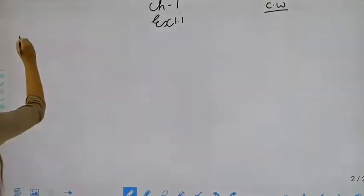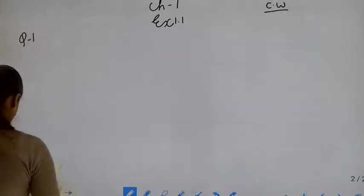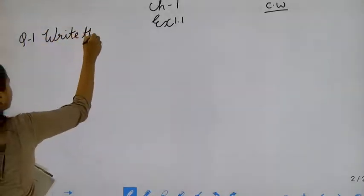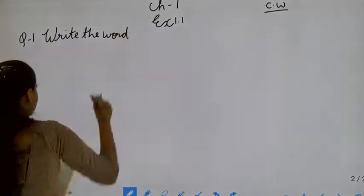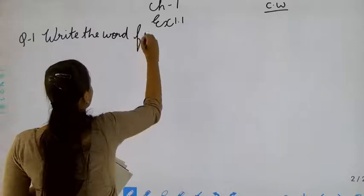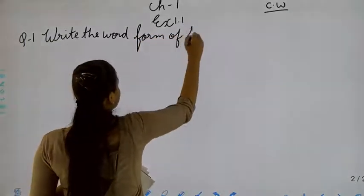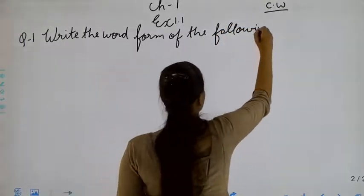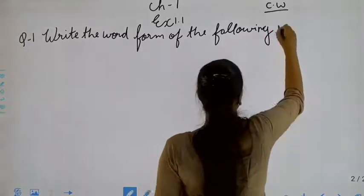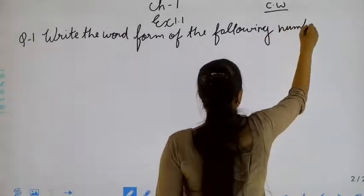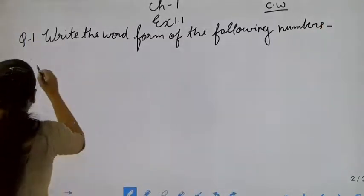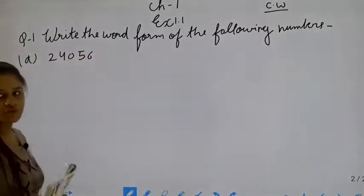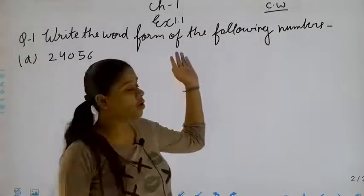Now, Question 1: write the word form of the following numbers. First part — students, what we have to do is write the word form of the following numbers.